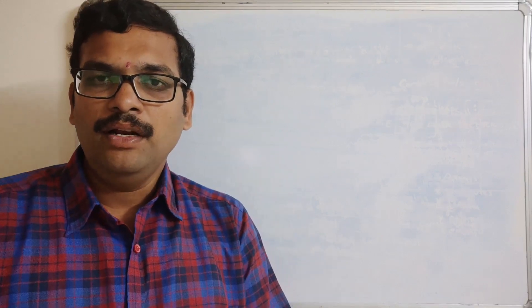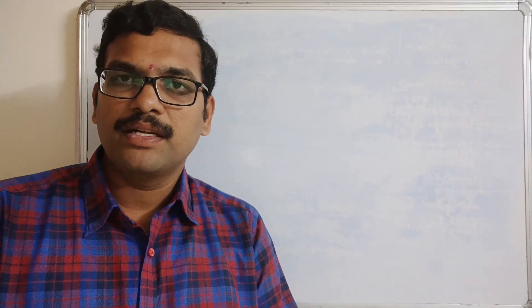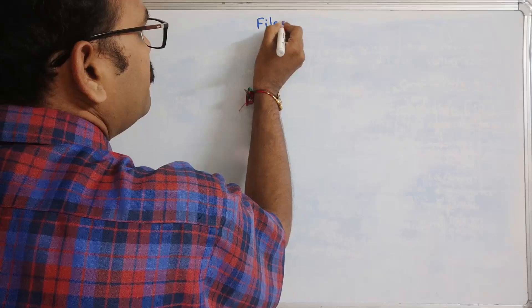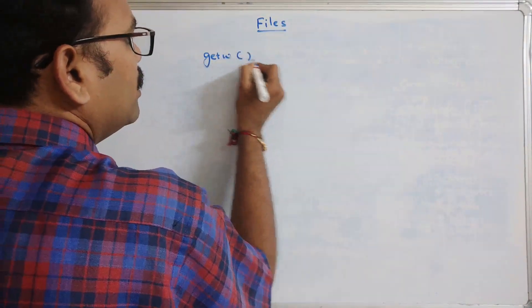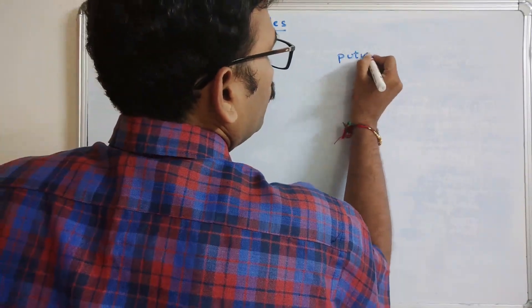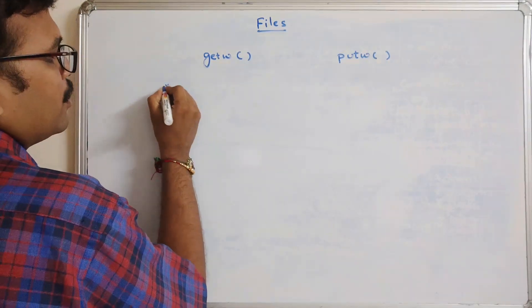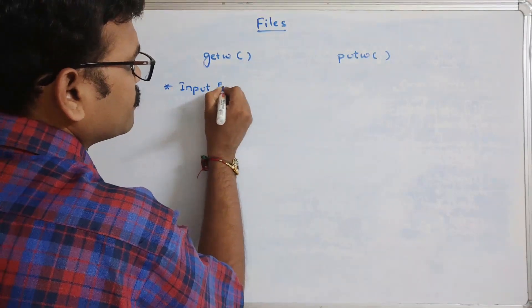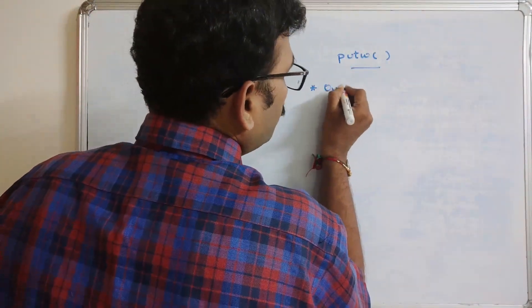Hello friends, welcome back to our channel. In today's session we'll discuss one more topic in C programming: the getw function and putw functions in files. In the files concept in C, we have getw and putw. The first one, getw, is an input function and putw is an output function.